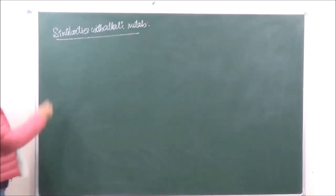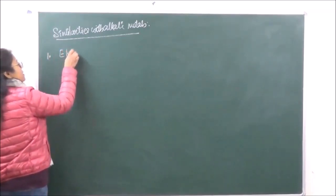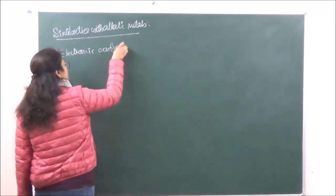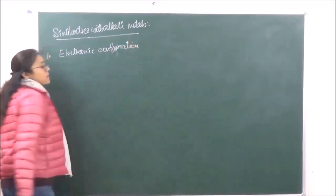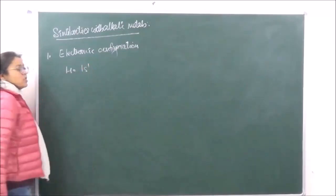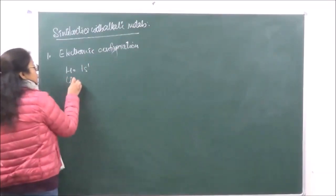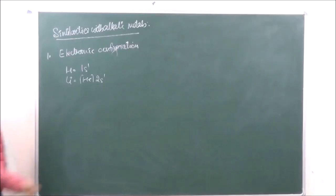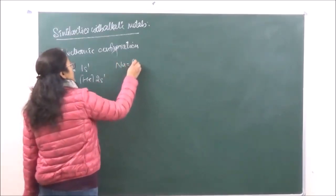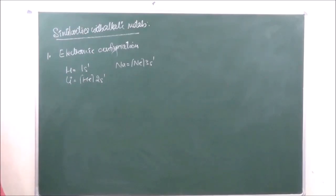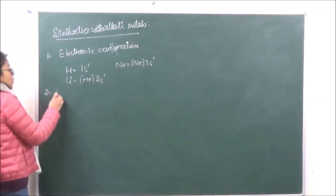Similarities with alkali metals. The first similarity is electronic configuration. The electronic configuration of Hydrogen is 1s1. Similarly, the electronic configuration of Lithium in the outermost shell is 2s1, and of Sodium it is 3s1. It has one electron in the outermost shell just like all the other alkali metals. Therefore, it is going to have an electro-positive character.